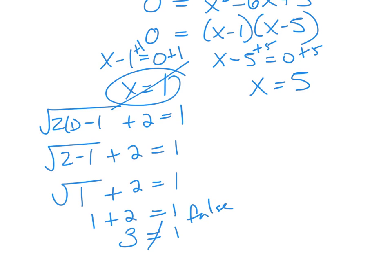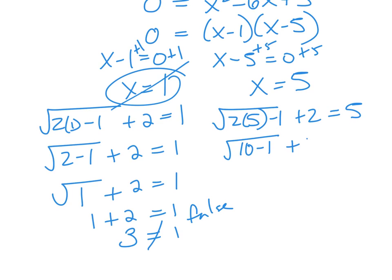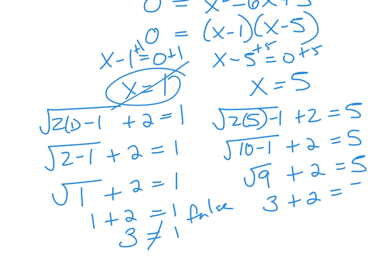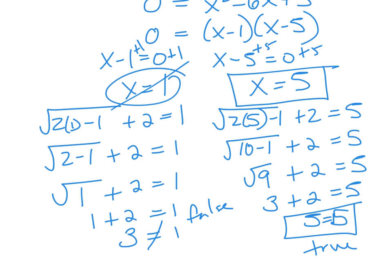x equals 1 is an extraneous solution. Let's check x equals 5: the square root of 2 times 5 minus 1 plus 2 equals 5. That gives the square root of 9 plus 2 equals 5, and the square root of 9 is 3, so 3 plus 2 equals 5. This is true, so our solution set is x equals 5.